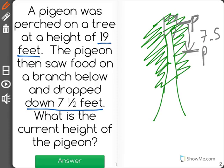There's the pigeon's new location. So what we have here is a subtraction problem. We started at a height of 19 feet and we subtracted 7.5 feet.